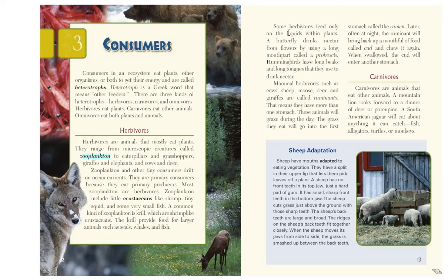Some herbivores feed only on the liquids within plants. A butterfly drinks nectar from flowers using a long mouthpart called a proboscis. Hummingbirds have long beaks and long tongues to drink nectar. Mammal herbivores such as cows, sheep, moose, deer, and giraffes are called ruminants — meaning they have more than one stomach. These animals graze during the day. The grass they eat goes first into a stomach called the rumen. Later, often at night, the ruminant brings back up a mouthful of food called cud and chews it again. When swallowed, the cud enters another stomach.